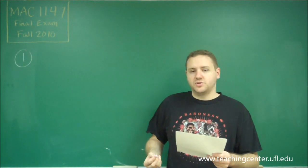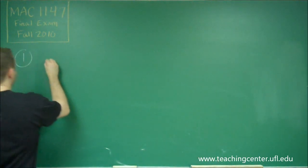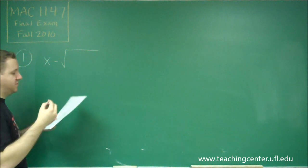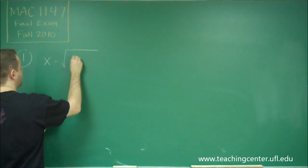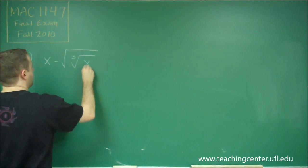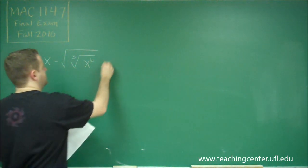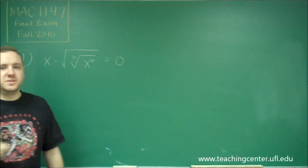Remember when we were asking a true-false question, we have x minus—we have a couple of nested radicals here. We have the square root of the cube root of x to the sixth, and we're asked that this is equal to zero.